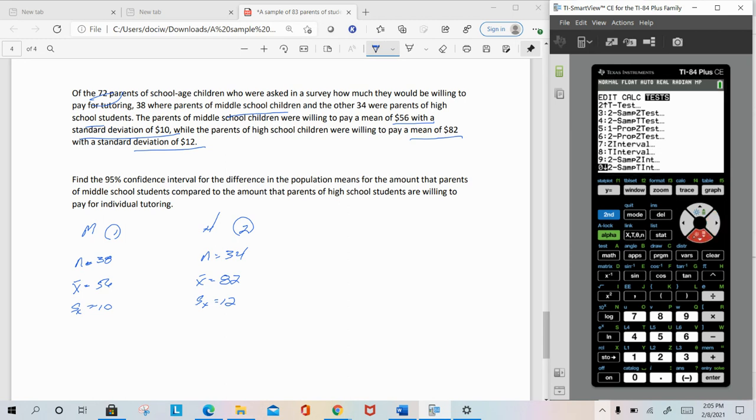Similarly, in this case we have two samples. It's two groups, so it's either number 9 or number 0, number 10. Is it a z interval for two means or a t interval for two means? Since we don't know sigma, we're going to go with 0, number 10 there, for the difference of the two means.